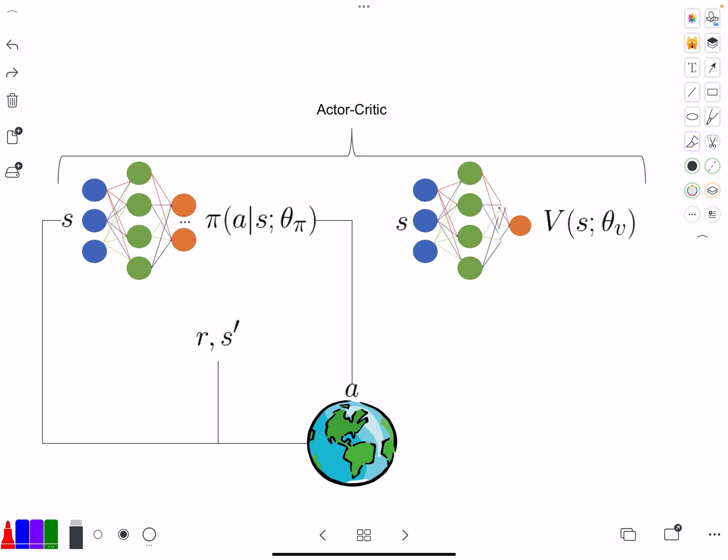The environment then is going to respond, quote unquote respond, is really going to evolve in a certain way. And then you're going to have a new observation available or a new state that is S prime. And then you're going to have a reward.